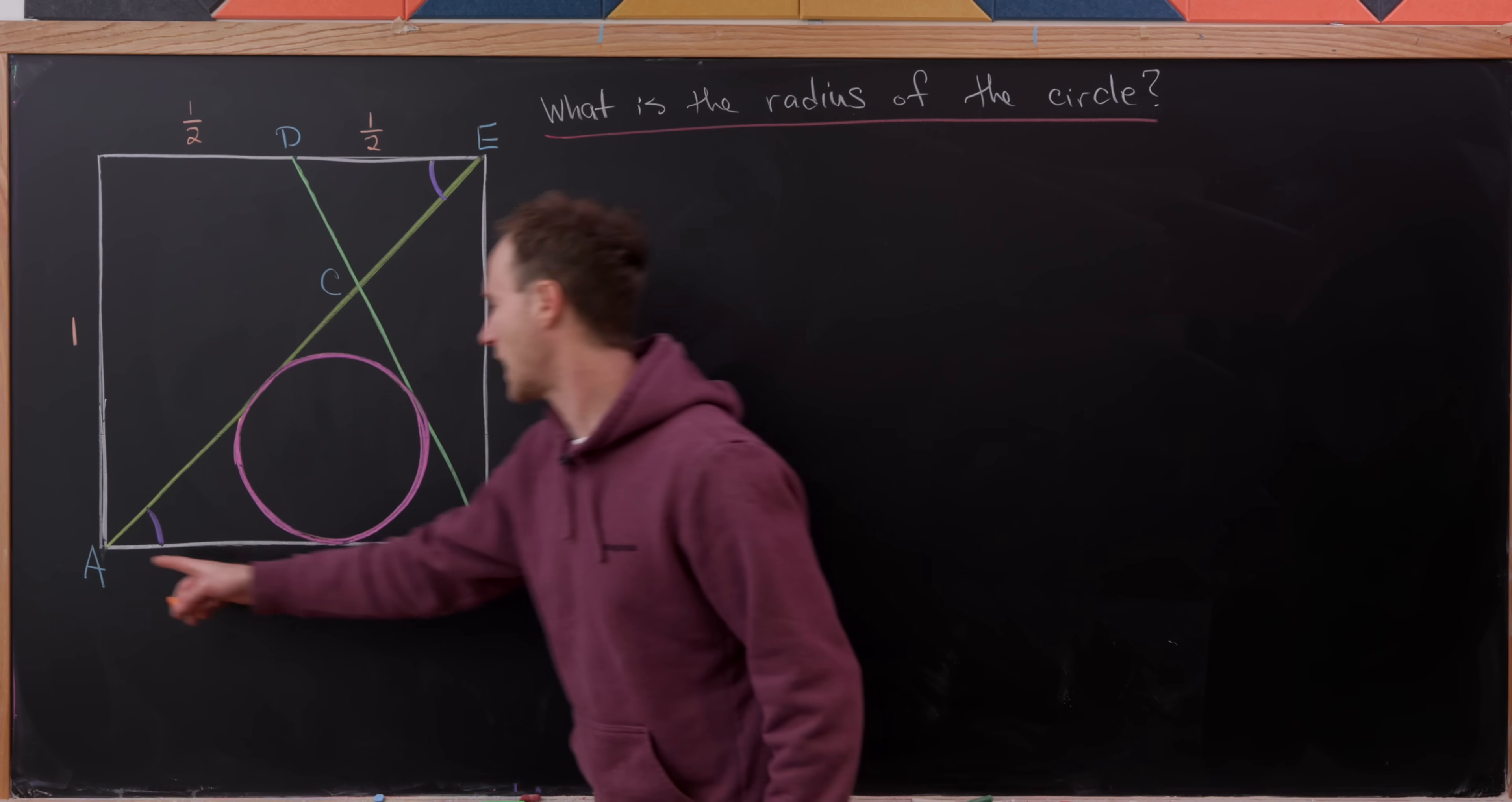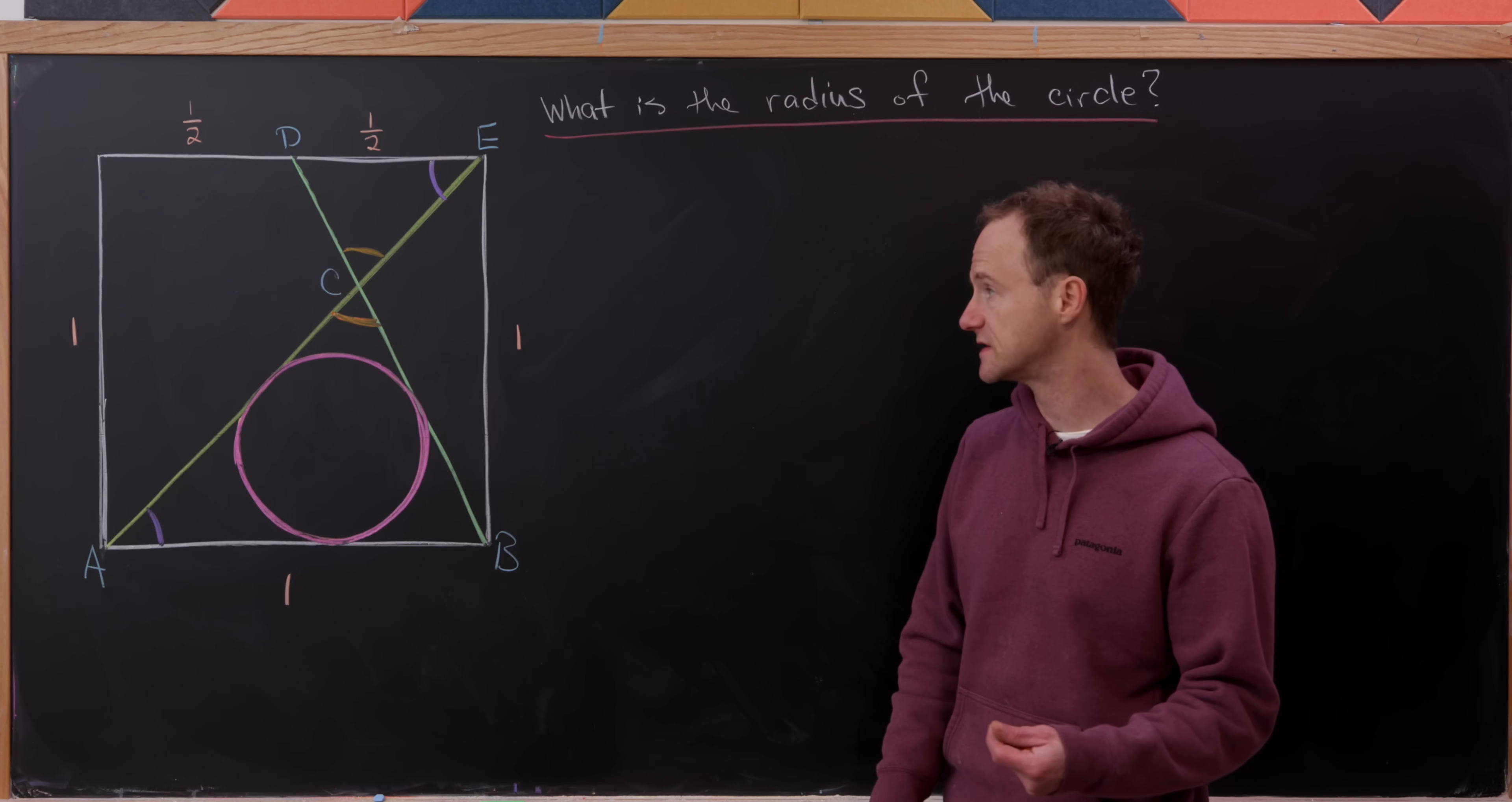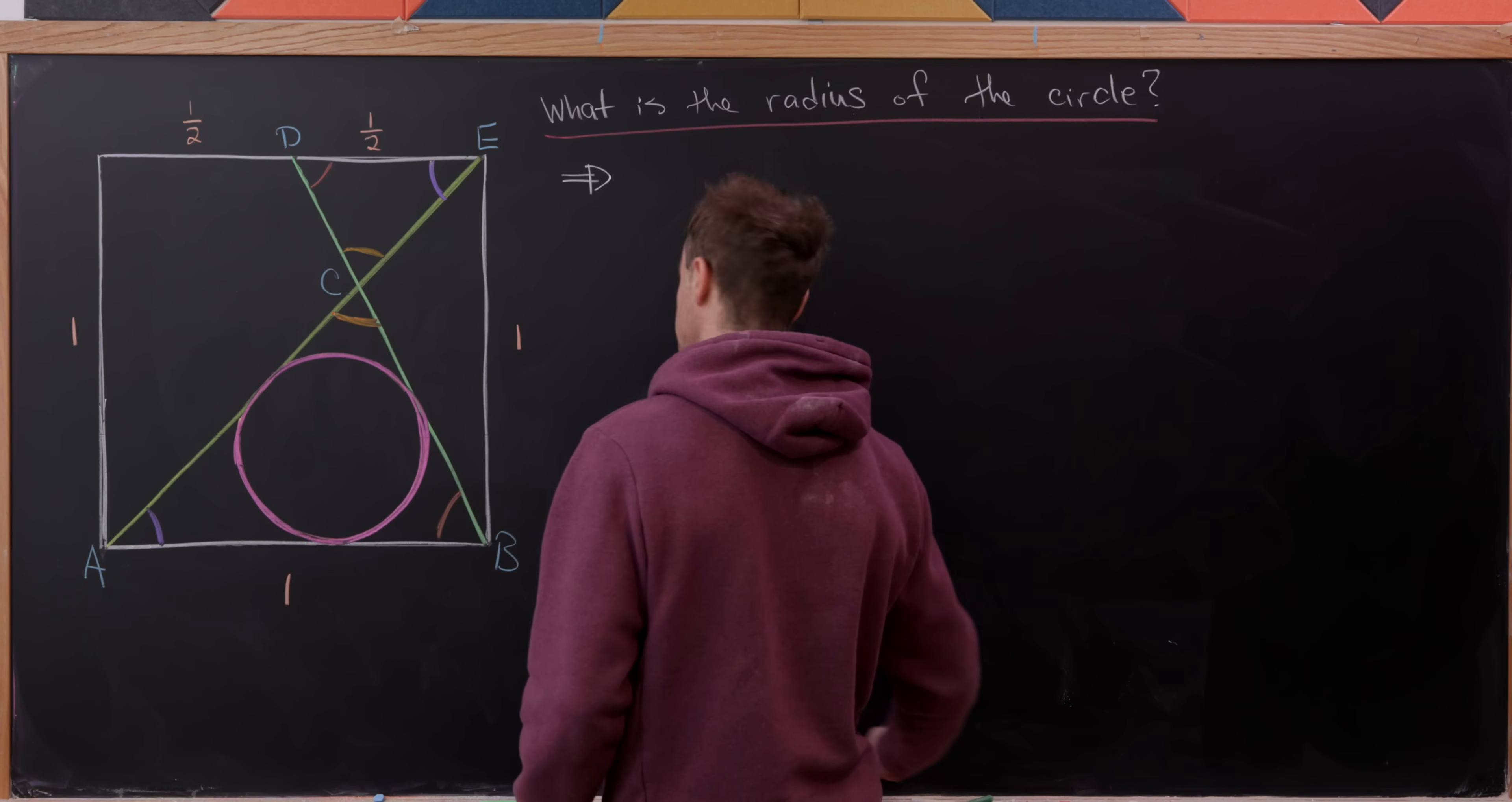And then observe that angle ACB and angle DCE are opposite each other. But opposite angles are always congruent. So that means these have the same measure as well. So I'll use orange to denote these angles. But then the sum of the angle measures of a triangle always adds up to 180 degrees. So if we have two angles that are the same, then necessarily the third angles have the same measure. So that means angle EDC or CDE is the same thing as angle ABC.